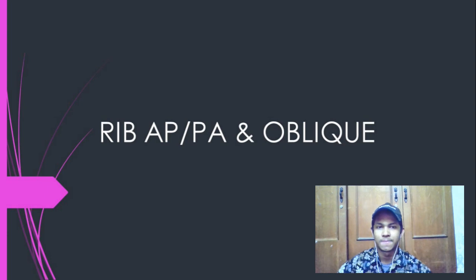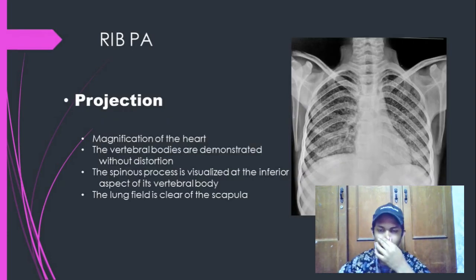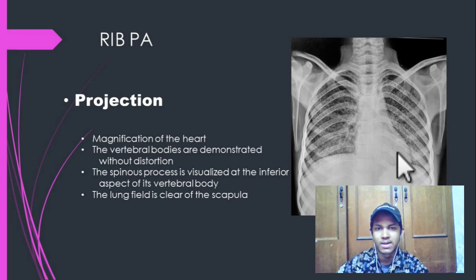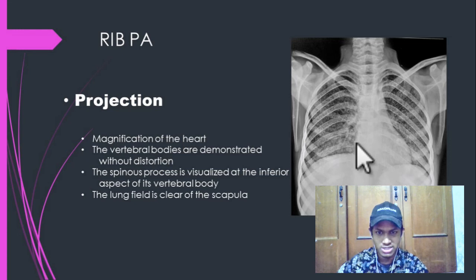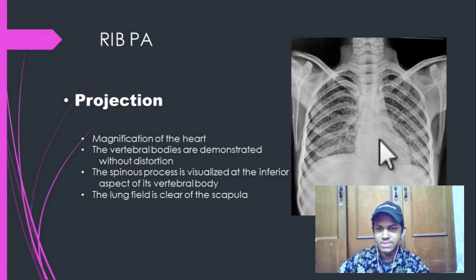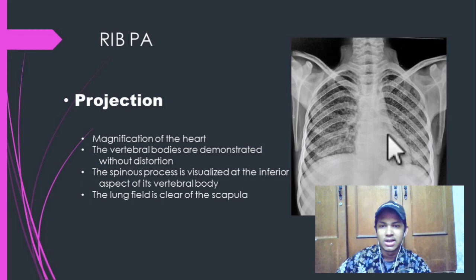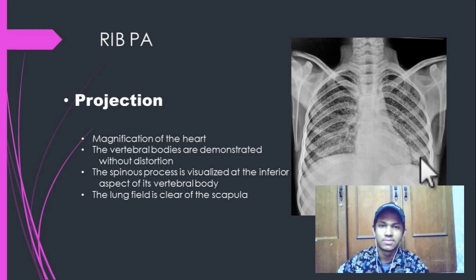We jump into the RIBS PA first. For the projection, this is an AP RIBS. Why? Because there is magnification of the heart — you can see the heart is magnified. The vertebral bodies are demonstrated without distortion. The spinous process is visualized at the inferior aspect of its vertebral body. And the lung field is clear of the scapula.